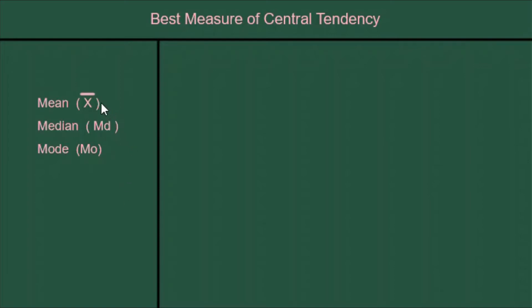These are the mean, otherwise known as x-bar, the median, which can be abbreviated MD, and the mode, which is abbreviated MO.